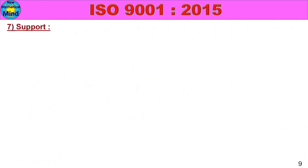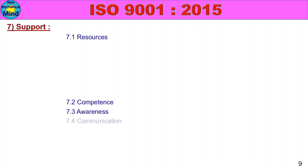Class 7 Support contains five subclasses: 7.1 Resources, 7.2 Competence, 7.3 Awareness, 7.4 Communication, and 7.5 Documented Information.